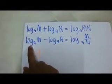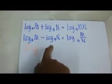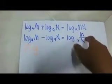For the fifth law, log M base A minus log N base A is equal to log M over N base A.